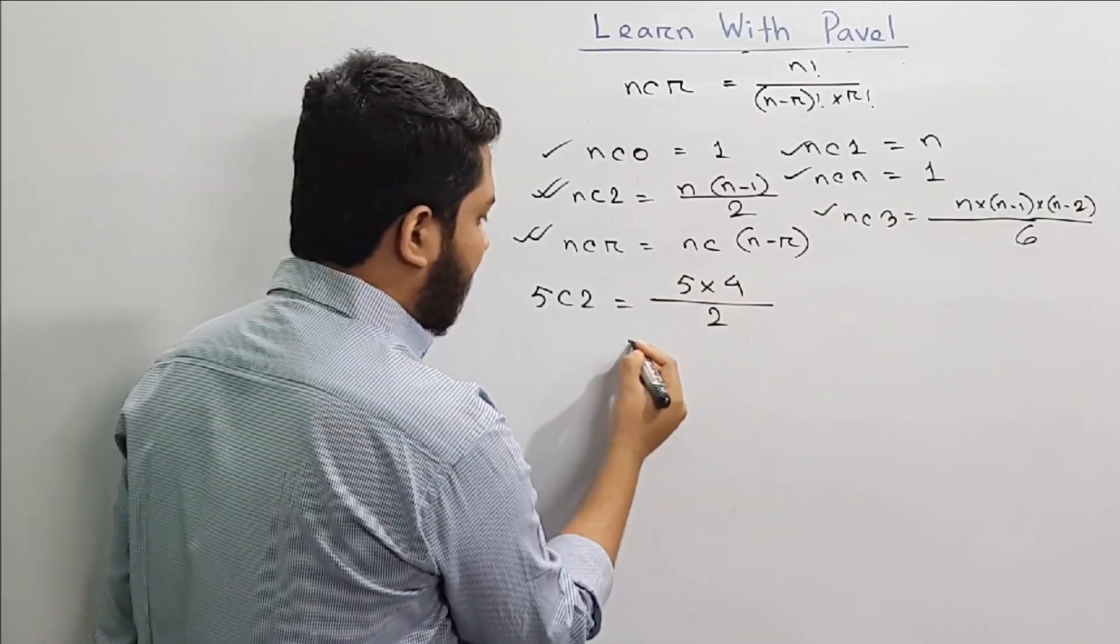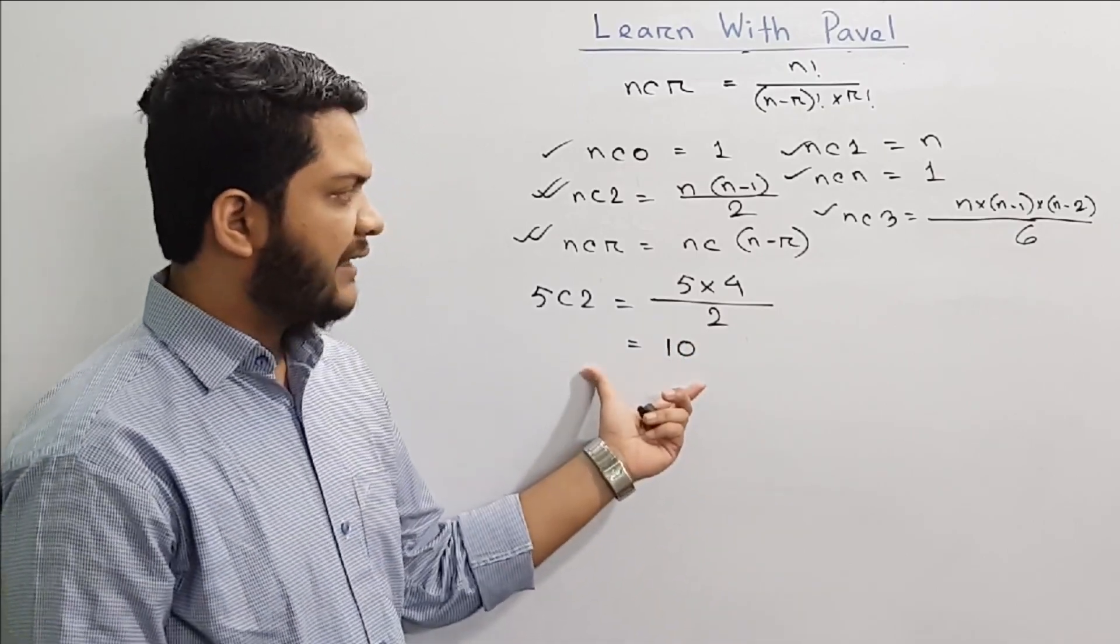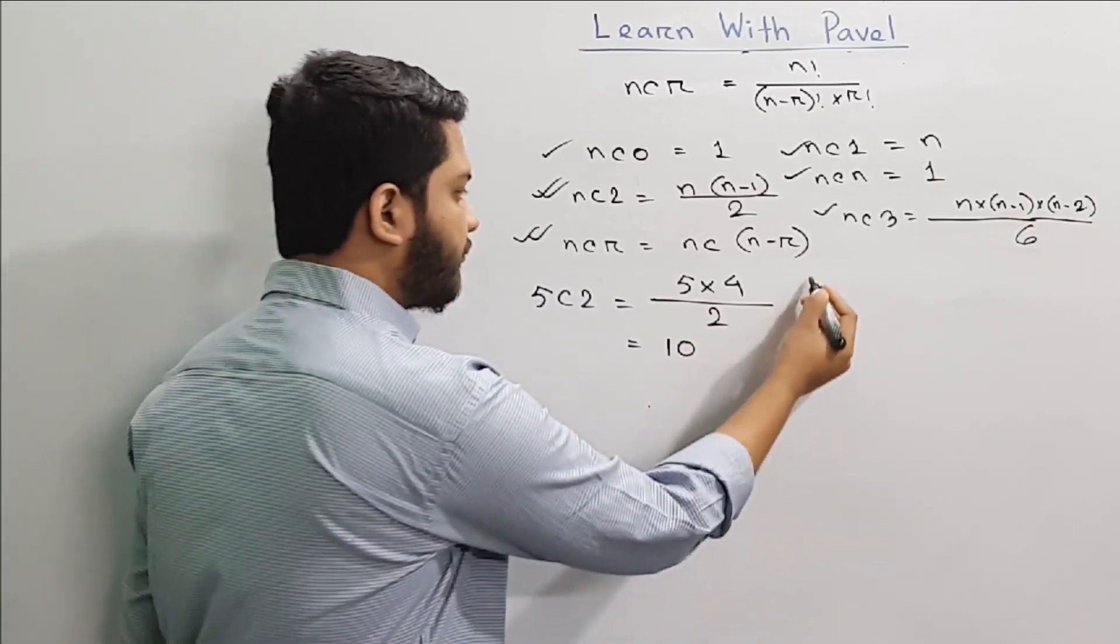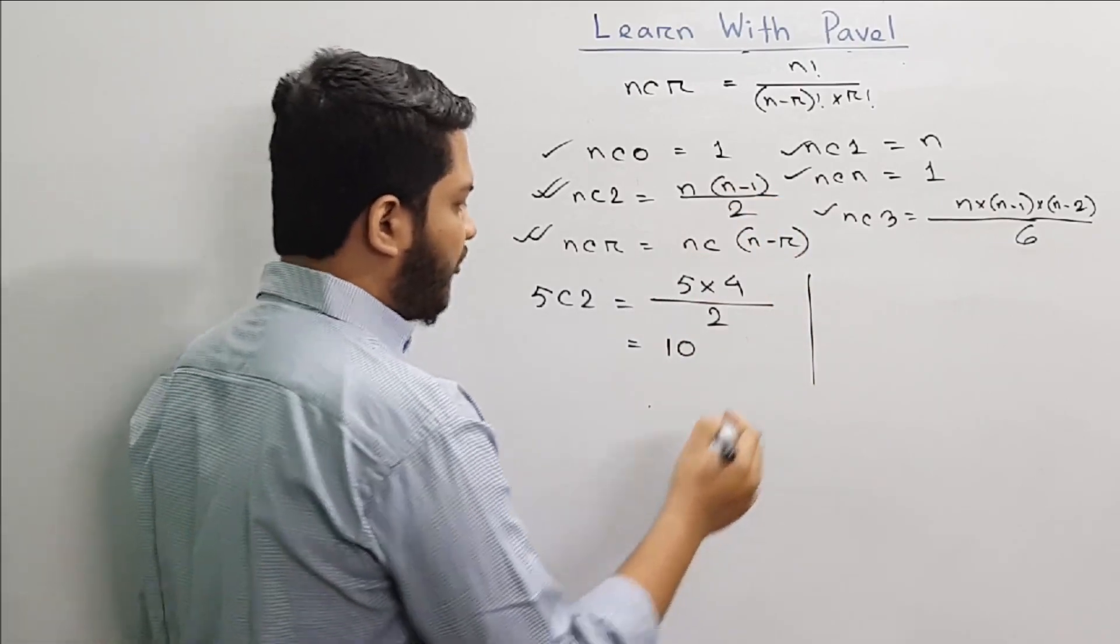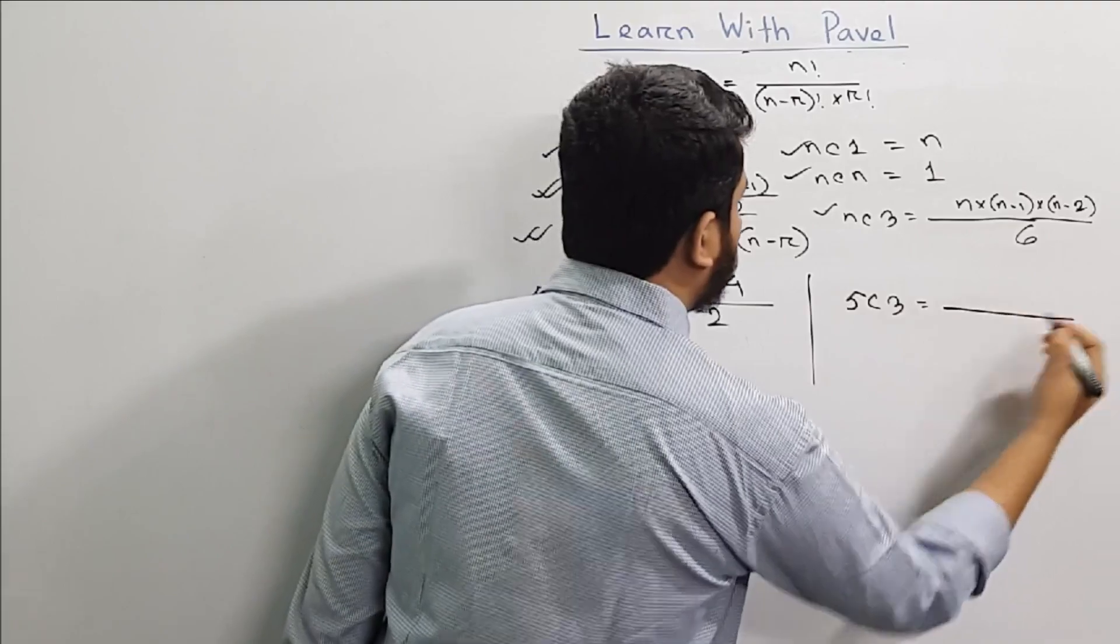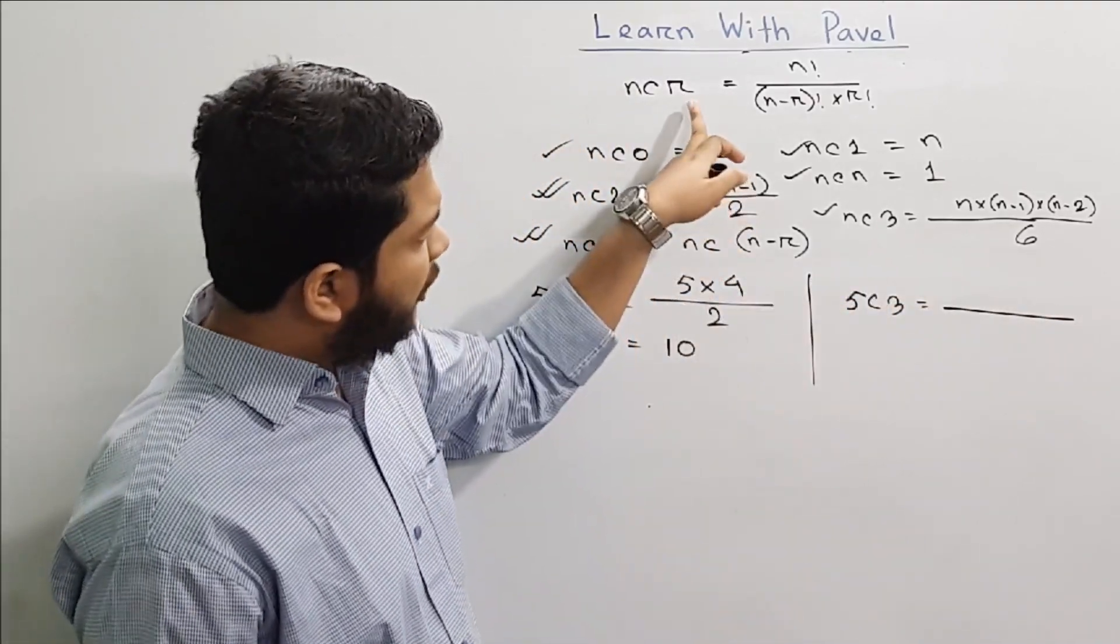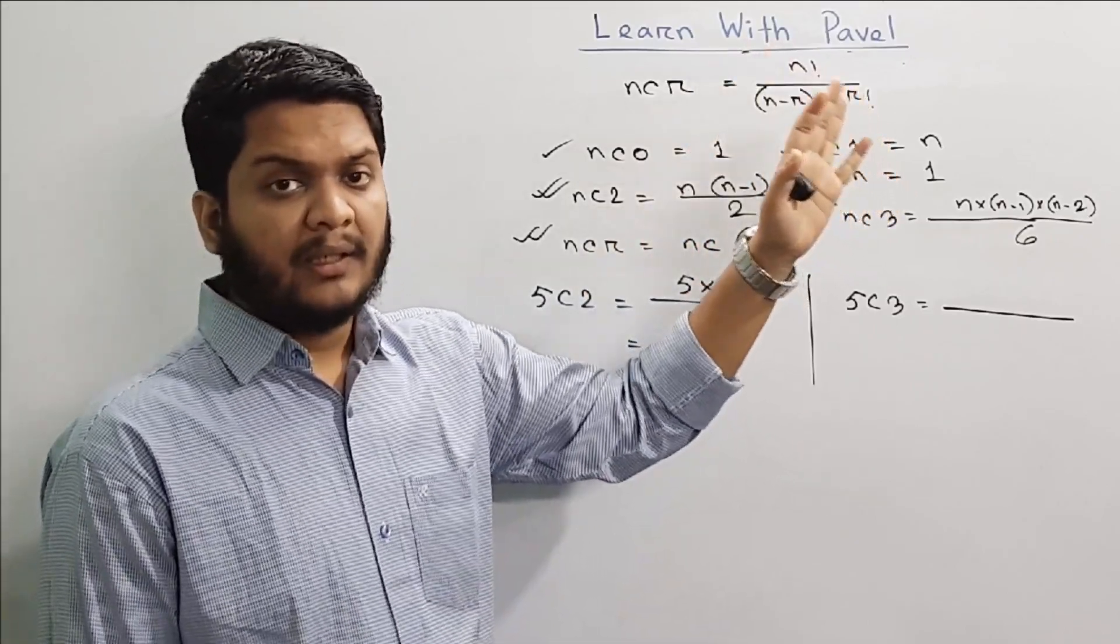Dividing by 2, we get... 5 times 4 divided by 2...